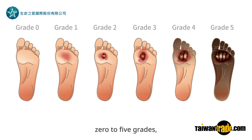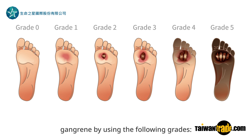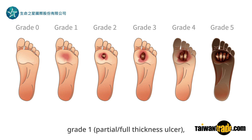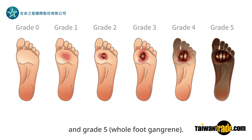Ulcers are divided into grades 0 to 5, with grade 5 being the most serious — whole foot gangrene. Grading is based on ulcer depth and the presence of gangrene: Grade 0 is a pre- or post-ulcerative lesion; Grade 1 is a partial or full thickness ulcer; Grade 2 involves probing to tendon or capsule; Grade 3 is deep with osteitis; Grade 4 is partial foot gangrene; and Grade 5 is full foot gangrene.